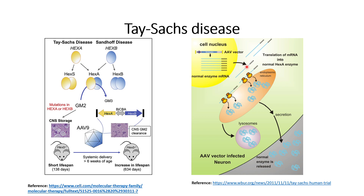The normal gene is transcribed into normal HEXA enzyme mRNA, and then translation occurs in the cytosol of the cells to form a normal HEXA enzyme. After passing through normal post-translational modification in the endoplasmic reticulum and then the Golgi apparatus, it finally goes to its destination — the lysosome. Some part of this protein is also secreted outside the cells so it can work on the extracellular matrix, or other cells can take up this HEXA enzyme to help reduce the lysosomal load on those cells.